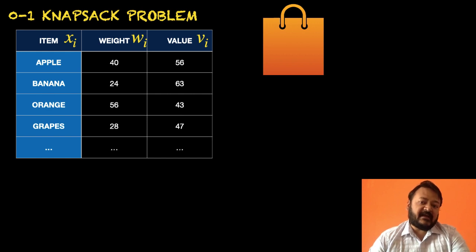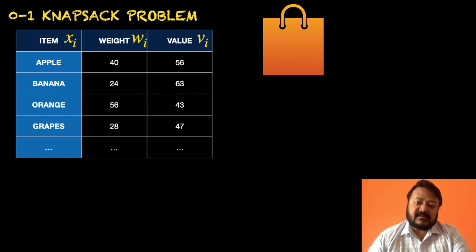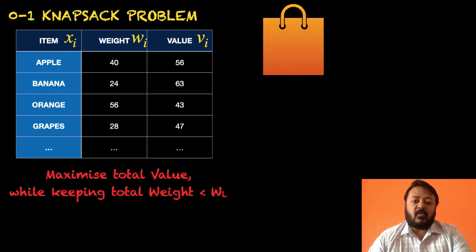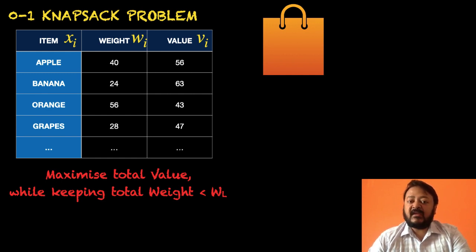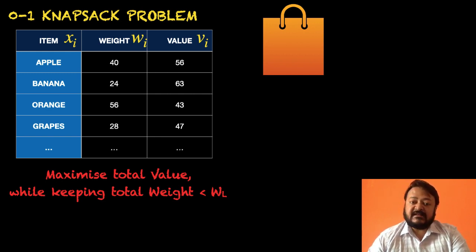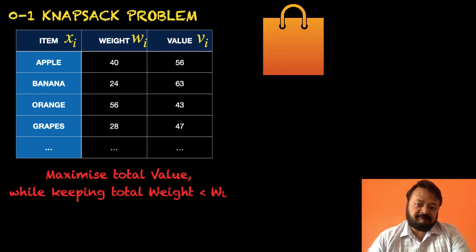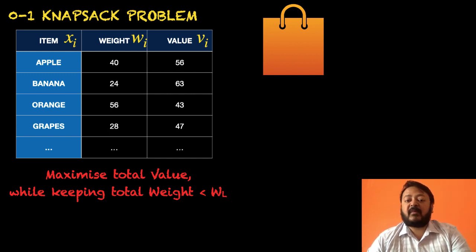Each item has a certain weight and a certain value. The restriction is that you have a single carry bag which can hold only a certain amount of weight, so you want to choose which items to buy in order to maximize the total value — the total importance all these items have for you — while making sure that the total weight is less than some threshold, denoted by WL. If the total weight exceeds WL, your bag will not be able to carry all the fruits.